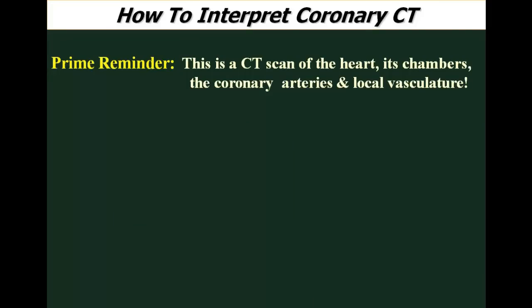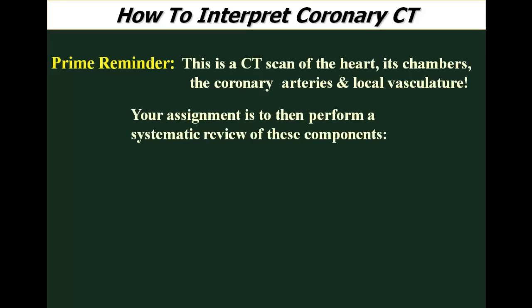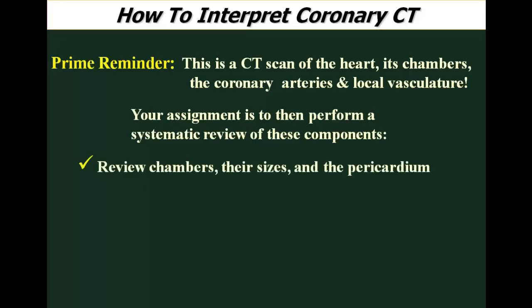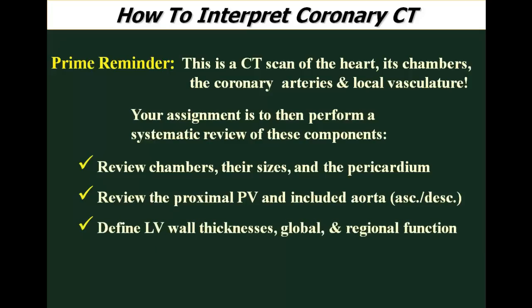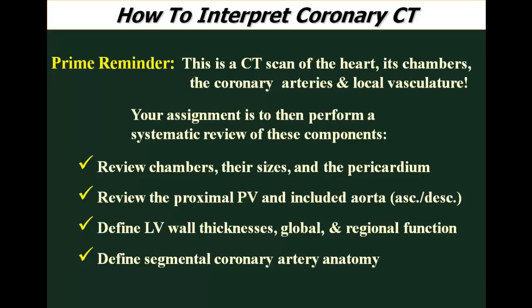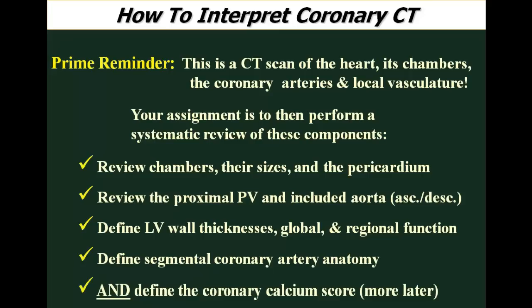The prime reminder is this is a CT scan of the heart, its chambers, the coronary arteries, and local vasculature. Your assignment is to perform a systematic review of these components. You need to review the chambers, their sizes, and the pericardium; the proximal pulmonary veins and included aorta, ascending and descending; left ventricular size, thickness, and global and regional function if it's a retrospective study; segmental coronary artery anatomy, which is usually the prime objective; and the coronary calcium score.